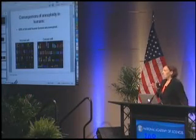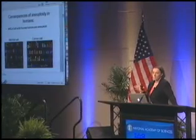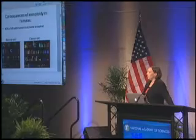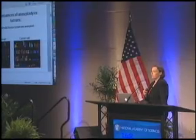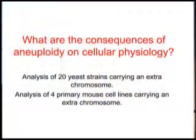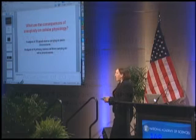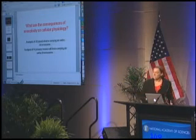Why and how aneuploidy causes so many different diseases in basically all organisms where this has been studied is really not well understood. Several years ago we decided to ask what the consequences of aneuploidy are on a normal cell. We've studied this in two settings: we created 20 different budding yeast strains with defined aneuploidies — usually one, two, or three extra chromosomes — and we created primary mouse cells carrying one of four additional chromosomes, which I'll refer to as trisomic mouse cells.